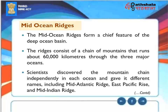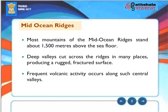Mid-Ocean Ridges: The Mid-Ocean Ridges form a chief feature of the deep ocean basin, consisting of a chain of mountains that runs about 60,000 kilometers through the three major oceans. Scientists discovered the mountain chain independently in each ocean and gave it different names, including the Mid-Atlantic Ridge, East Pacific Rise, and Mid-Indian Ridge. Most mountains of the Mid-Ocean Ridges stand about 1,500 meters above the seafloor. Deep valleys cut across the ridges in many places, producing a rugged, fractured surface, and frequent volcanic activity occurs along such central valleys.